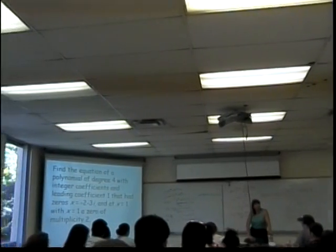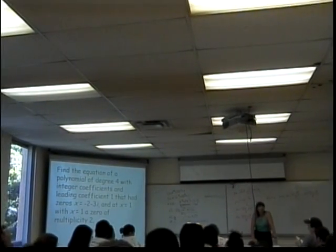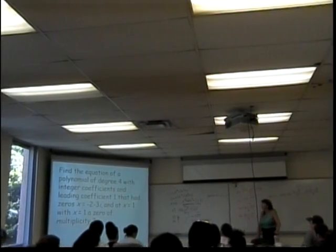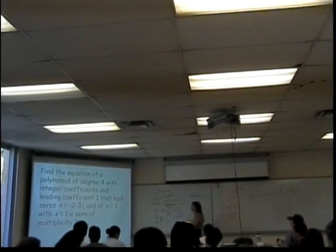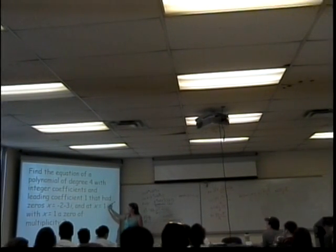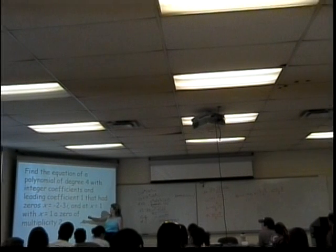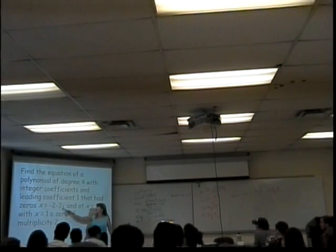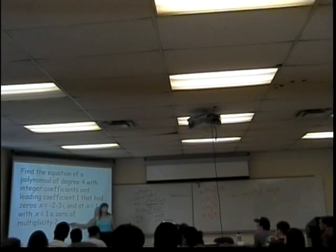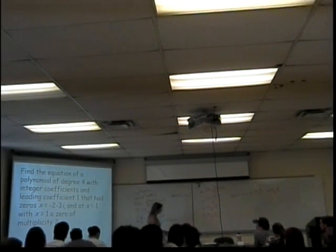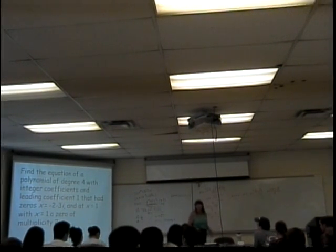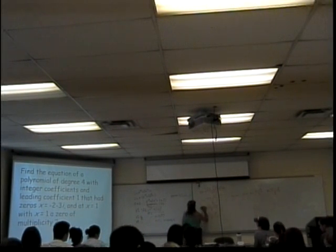Now we're going to work backwards. Find the equation of a polynomial of degree 4 with integer coefficients and a leading coefficient of 1, that has zeros x equals negative 2 minus 3i and x equals 1 with x equals 1 being a zero of multiplicity 2. This is just like what we did before with all those real numbers, but now we've got non-real numbers.